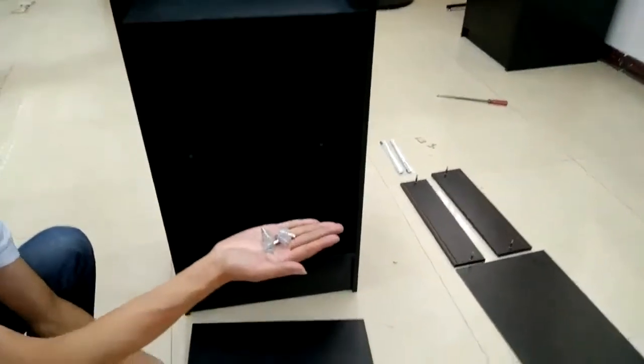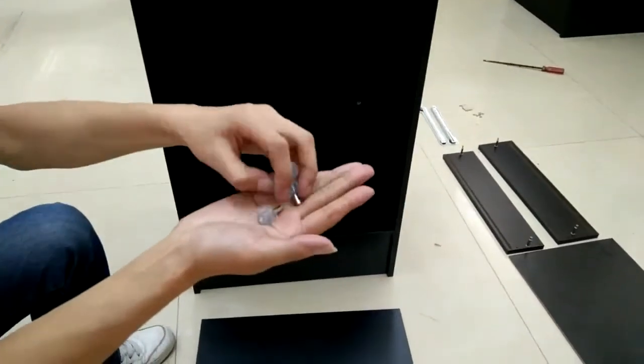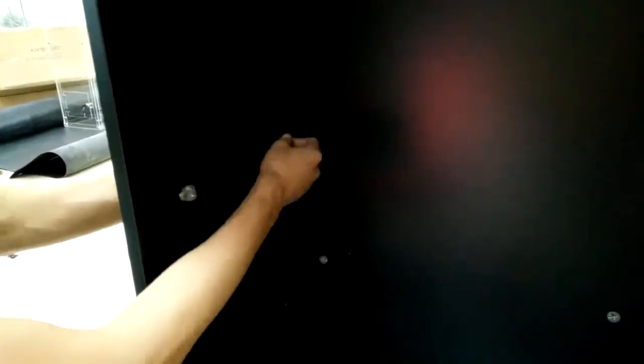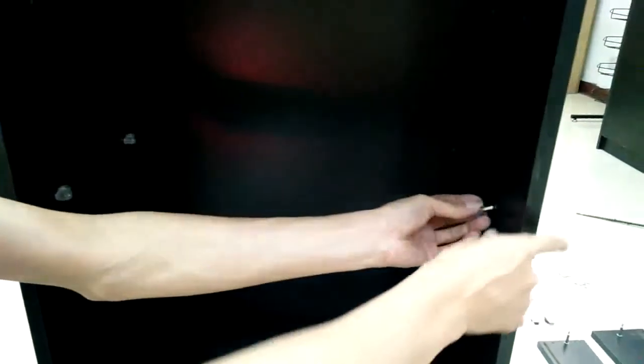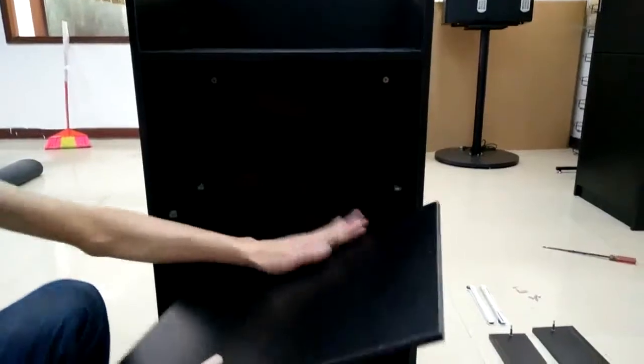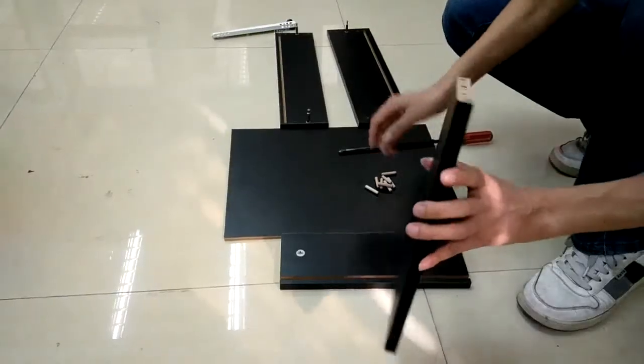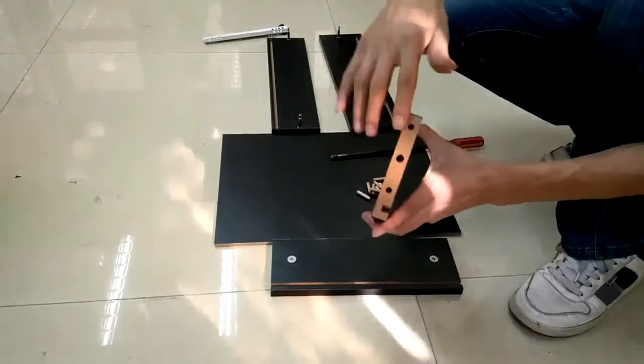Then you can rotate it, set it upright, and find where you want to put the shelf on it. There are several positions you can install. Insert the stoppers into the holes thoroughly, deep into it, and then you can put the shelf on. Now we'll show you how to assemble the drawers.